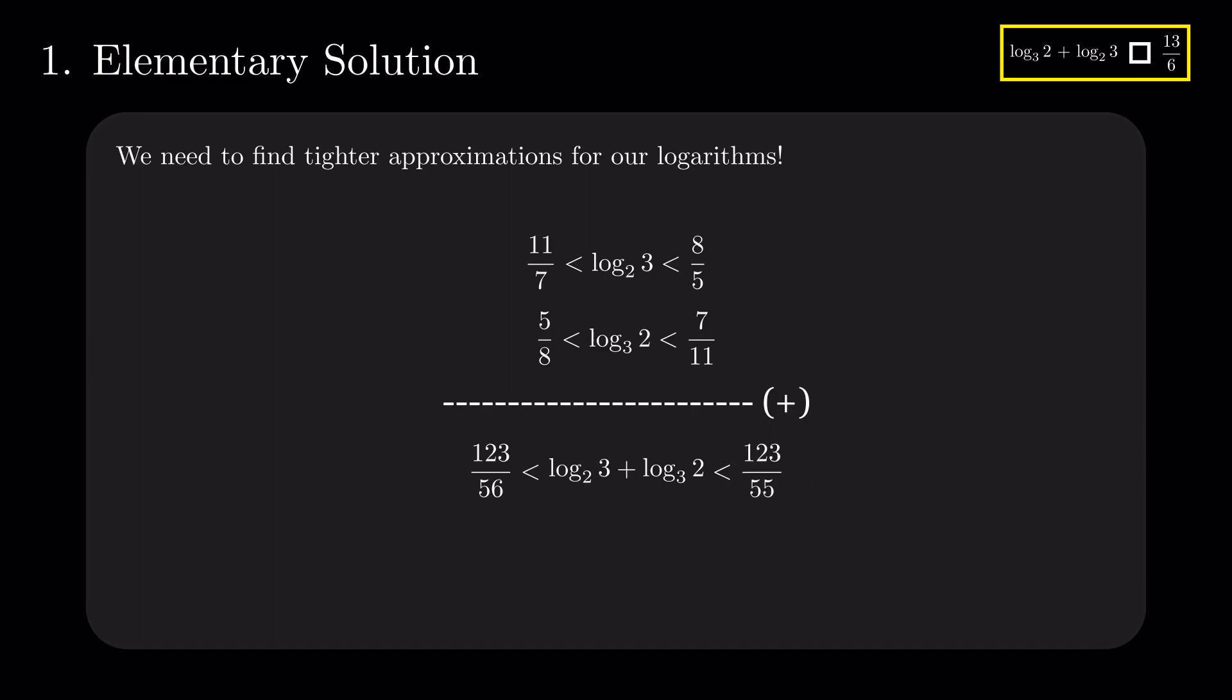It only remains to compare both of these numbers with 13 divided by 6. We hope that this value is not in the interval between the two approximations. Since the two ratios have the same numerator, let's bring all three to a common one, namely 1599.